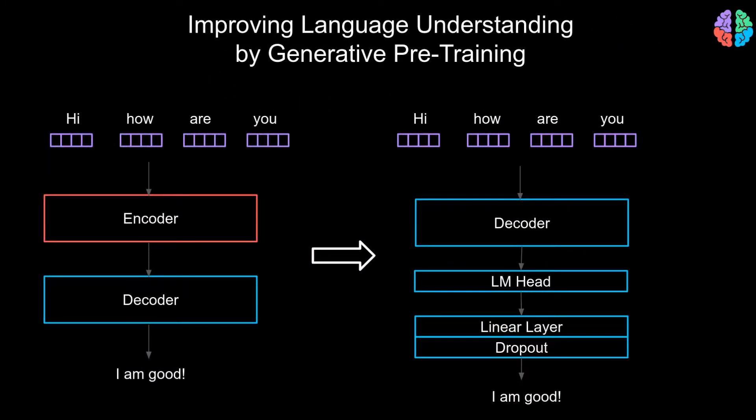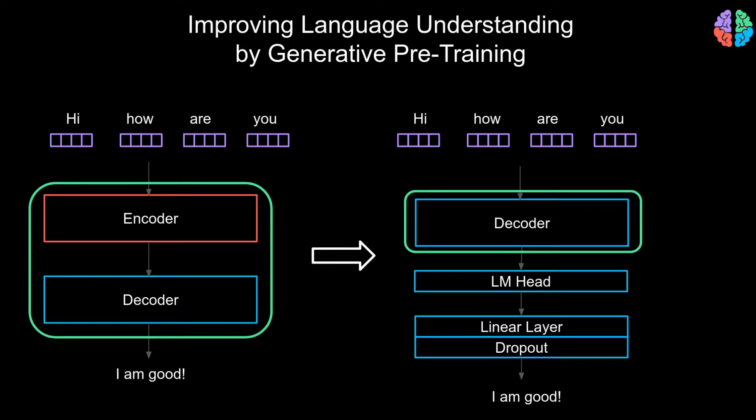Whereas the transformers used an encoder and decoder architecture, GPT uses a modified version which is just the decoder. In addition, there is an LM head during the first pre-training stage and also a classification head for supervised fine-tuning based on the chosen task. Let's learn about the GPT paper in this video.